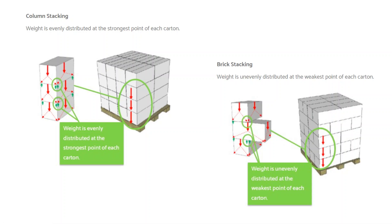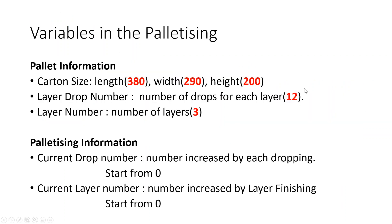Now, this time we're going to have a look at the pallet information — variables in the palletizing. Pallet information: you need to know minimum five variables. The carton size: length, width, height — three of them.